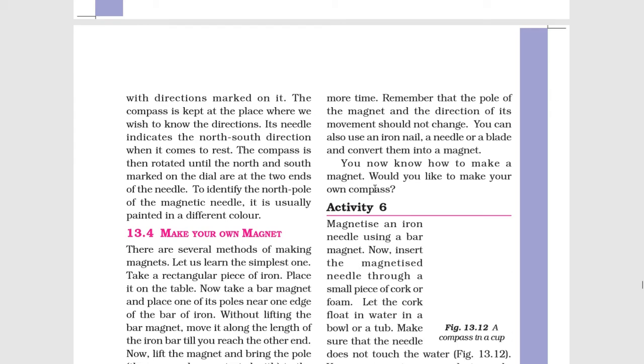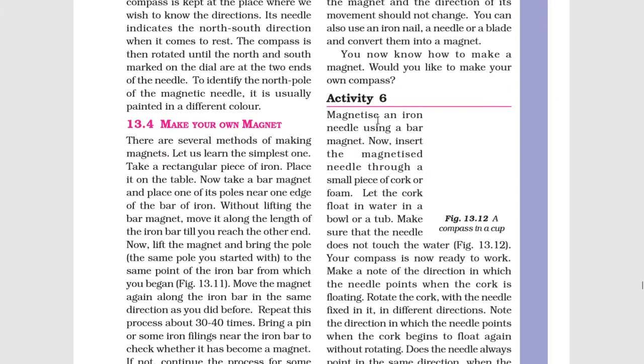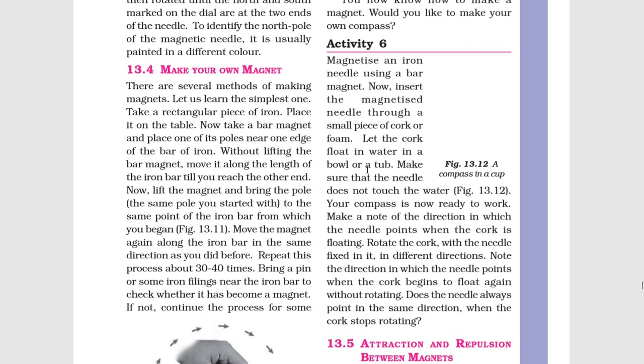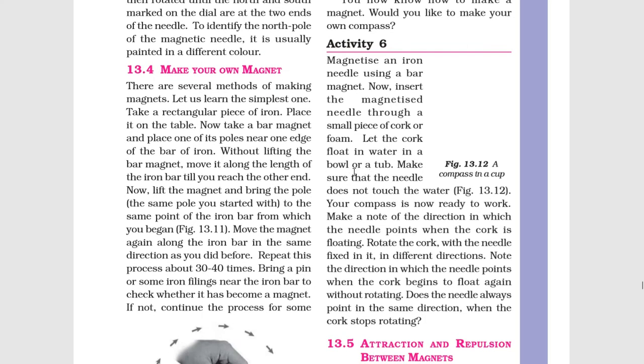Activity 6: Magnetize an iron needle using a bar magnet. Char chumbak ke upyog se lohe ki sui ko chumbakit kijiye. Now insert the magnetized needle through a small piece of cork or foam. Ab isse kisi chhoti cork ya foam ke tukde mein dalna hai.